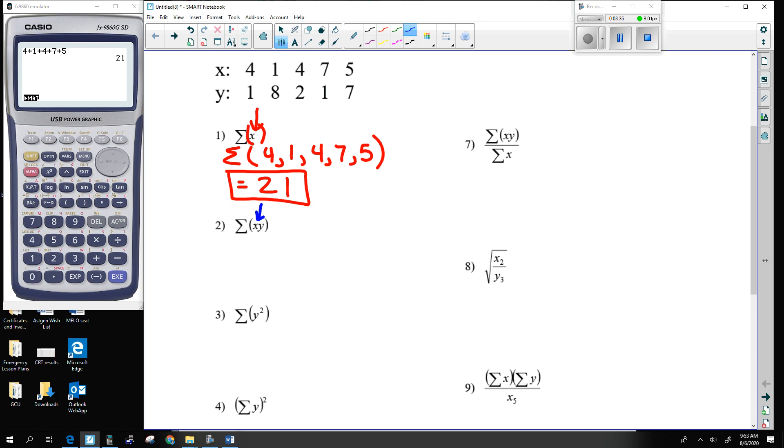What you do in this situation is you have to get little answers. The very last thing you do is add anything up. You have to multiply X times Y, and how you multiply X times Y is you take it element by element. So you're going to take 4 times 1, 1 times 8, 4 times 2, 7 times 1, and 5 times 7. So in essence you're taking X1 Y1, X2 Y2, X3 Y3, etc.